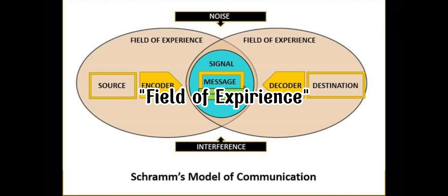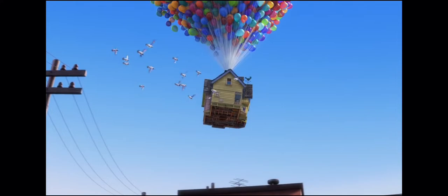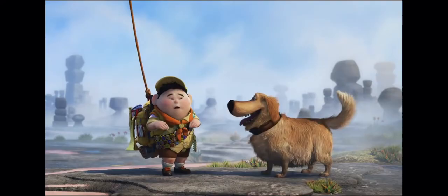When Russell comes knocking on Mr. Fredrickson's door in this scene from Up, he is being sent away. Mr. Fredrickson, the encoder of the message, sends and encodes his message of non-interest and unwillingness by saying that Russell must first find the snipe bird in his neighborhood.